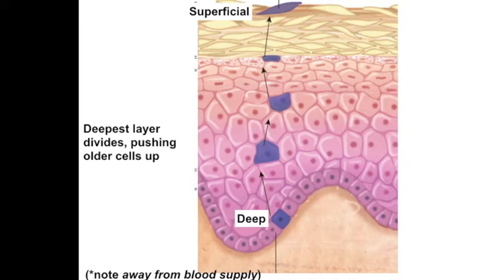That dead cell was the dividing cell only a month ago. It's worth noting that epithelia is avascular, and the deeper level cells are close to the blood supply of the underlying areolar tissue, whereas the more superficial cells have moved away from the blood supply — one reason why they begin to die. Being dead, though, is basically their job. Those dead cells are what you see when you look at another person and are just as important, if not more important, than the other layers.